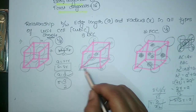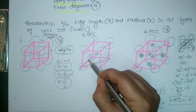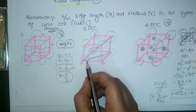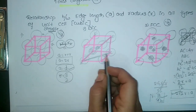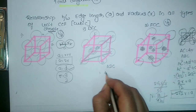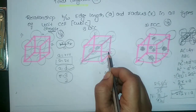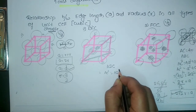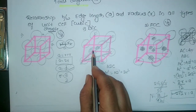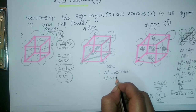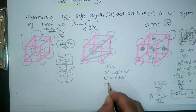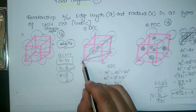In triangle ADC, AC² = AD² + DC². AD is an edge length so AD² = A², and DC is also an edge length so DC² = A². Therefore, AC² = 2A². This gives us the length of the face diagonal AC.